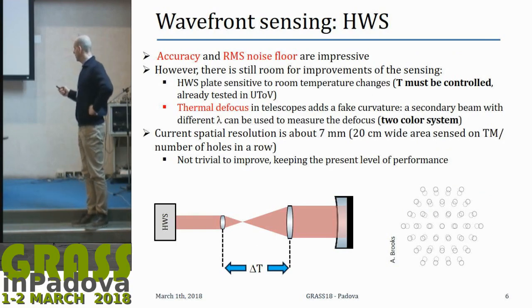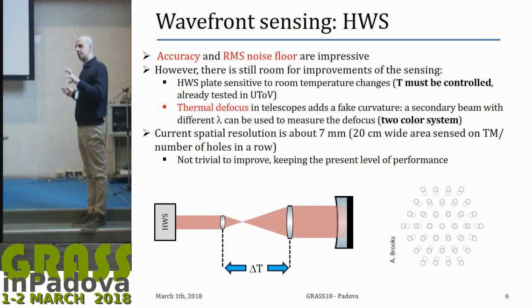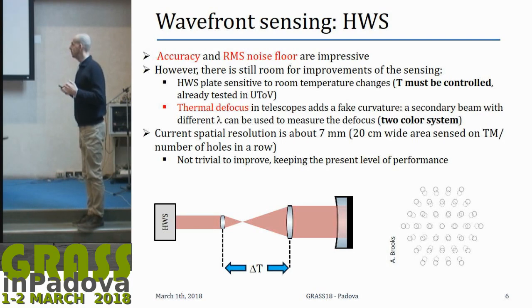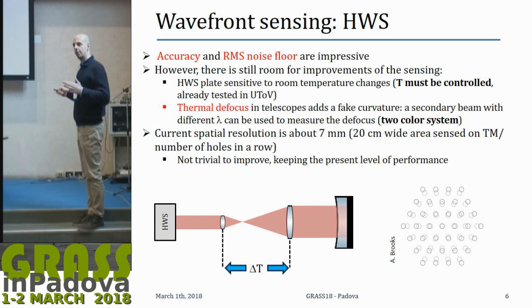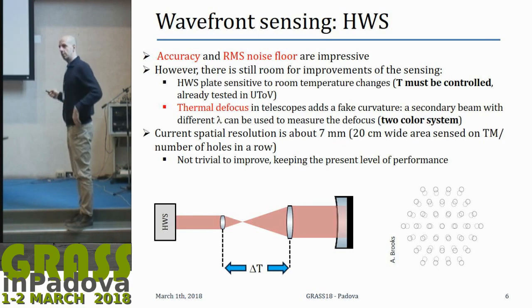In perspective, there is room for improvements in the Hartmann sensor. For instance, temperature variation acts as a deformation on the Hartmann plate, causing a displacement of the holes and introducing a spurious curvature into the sensor. So we need to control the temperature, at least for future applications. We also need to fix the thermal defocus that will occur due to expansion of the telescopes. This can be done, for instance, with a two-color system that uses a secondary beam with a different wavelength to directly measure the defocus and subtract it.